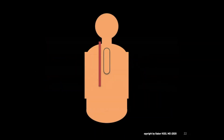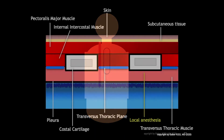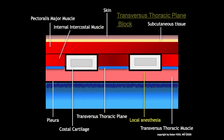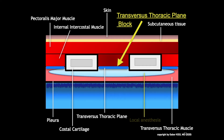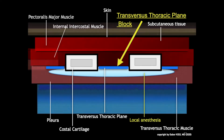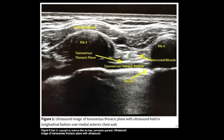In a sagittal cross-section view, we can see the spread of the local anesthesia in a TTP block. This longitudinal ultrasound image shows the anatomy before injection of local anesthesia.